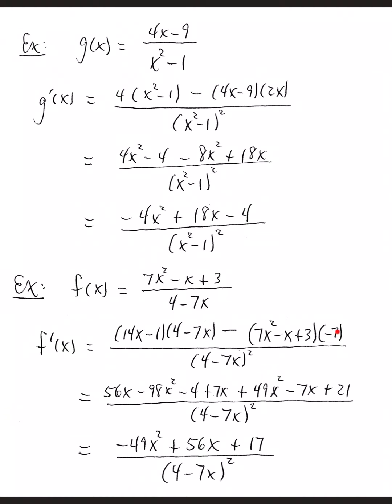This negative 7 you can bring out here, that subtraction and that negative 7 will make a positive 7. Distributing 7 is 49x squared minus 7x plus 21. Again, that negative and that subtraction makes a positive. And so it's really like distributing a positive 7. All over the original denominator squared.